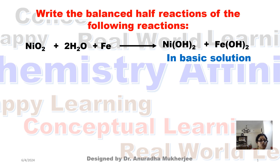In that regard, first we have to check the oxidation number. Oxygen is minus 2, so minus 2 into 2 means minus 4. Since it is a neutral compound, nickel's oxidation number is plus 4. Now iron's oxidation number is 0. In the nickel hydroxide, OH is minus 1, so minus 1 into 2 means minus 2, so nickel is plus 2.